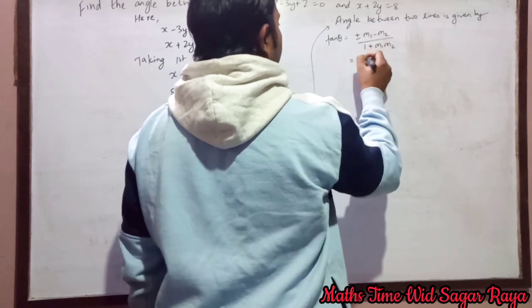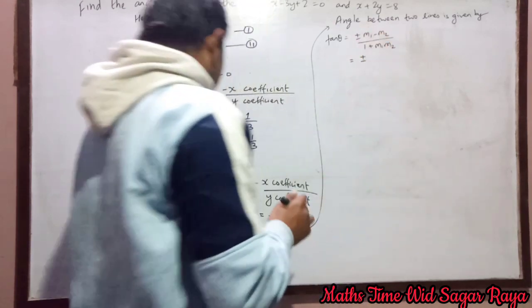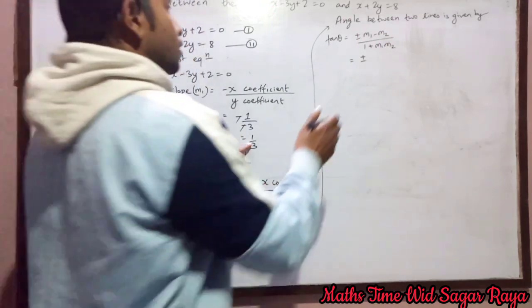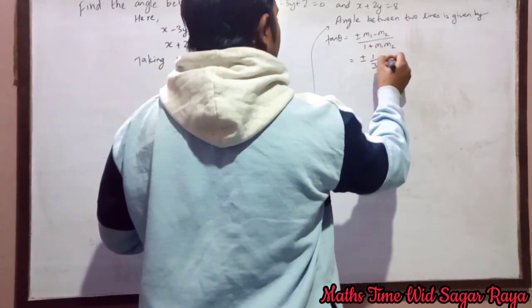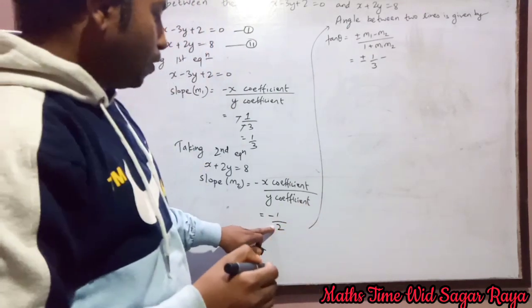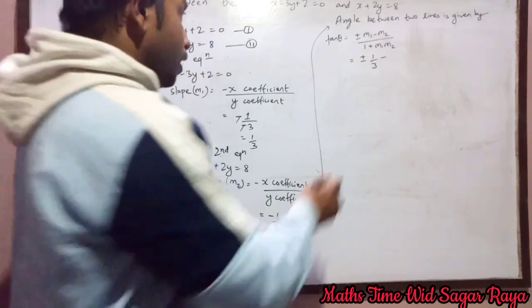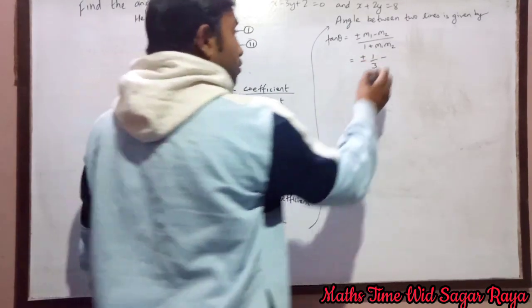So plus minus m1 means 1 by 3 minus m2, minus 1 by 2. So here is already minus, so minus minus it will be plus.